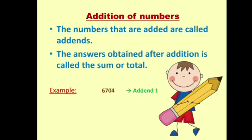For example, 6704 is addend 1, 1252 is addend 2, and the sum of these two numbers is 7956.